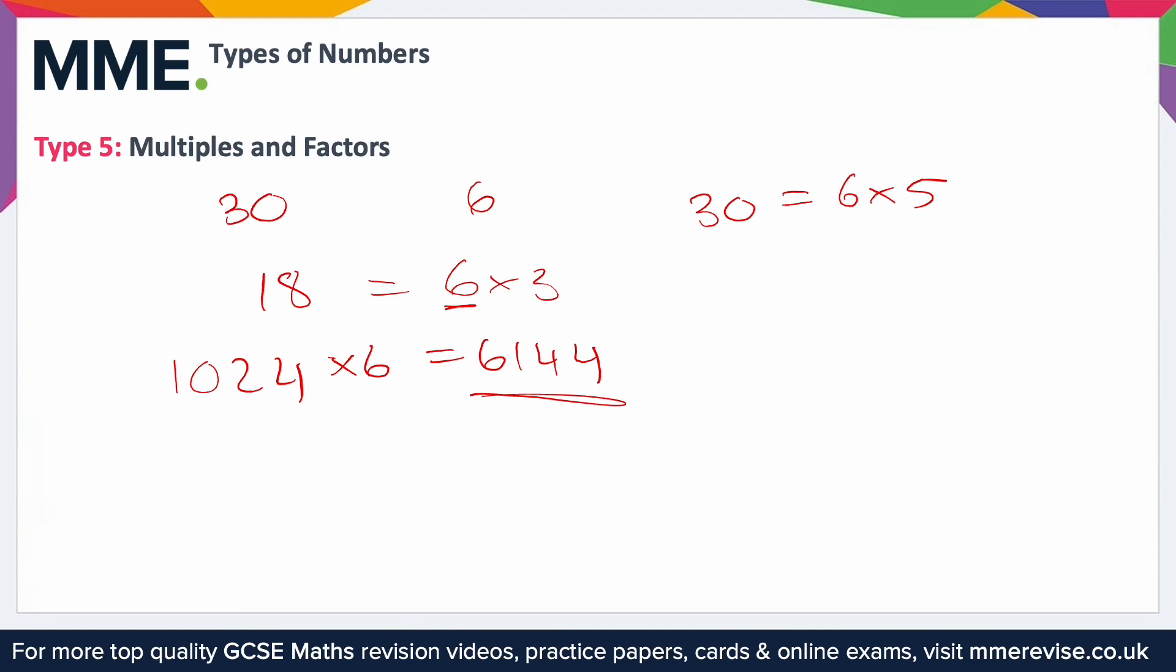The other one, factors, is defined as the numbers that go into another number. What I mean by that is, for example, you can say that 2 is a factor of 8 because 8 divided by 2 is 4. This is a whole number, an integer, so it is a factor.